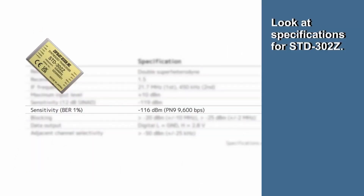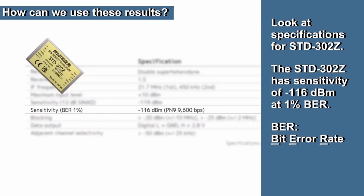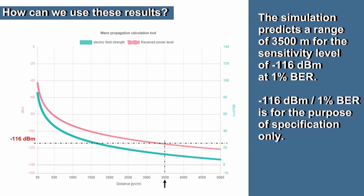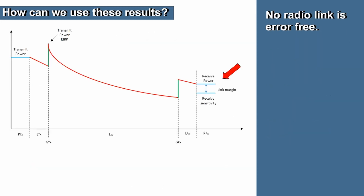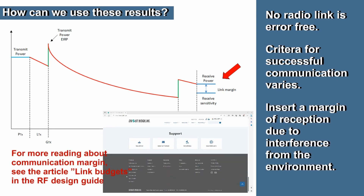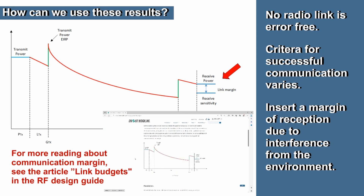Imagine that we are looking at the specifications of a module, let's say for example the STD302Z. If we look at the sensitivity values, we come across terms such as minus 116 dBm at 1% bit error rate. So having established our acceptable conditions for reception, we can draw our minimum threshold on the graph. We can see from our simulation that this would give us a usable range of about 3.5km. However, the relationship between the sensitivity value and the distance should only be a guide. Because in reality no radio link can be totally error free, and therefore the criteria for successful communication will vary from customer and type of transmission. Interference from the environment will cause the signal to fluctuate, so it is recommended to insert a margin to ensure stable and reliable communication. For more reading about communication margins, see the article on link budgets in the RF Design Guide.